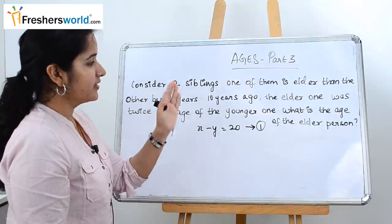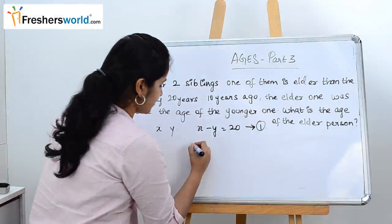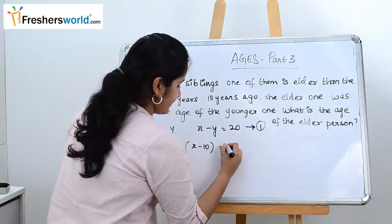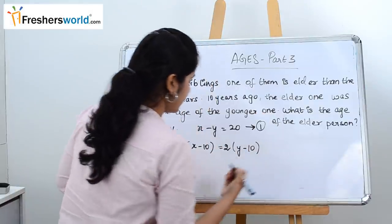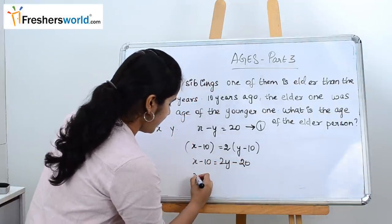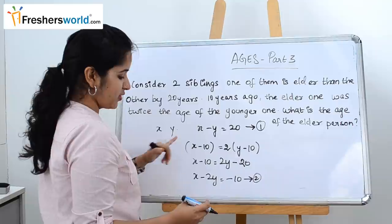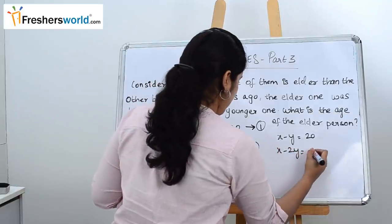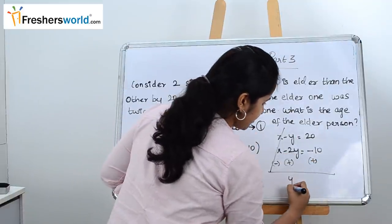Consider this as equation one. Ten years ago, the elder one was twice the age of the younger one. So x minus 10 equals 2 times (y minus 10), which simplifies to x minus 2y equals minus 10. This is equation two. Solving both equations: x minus y equals 20, and x minus 2y equals minus 10. Subtracting, y equals 30.